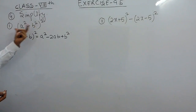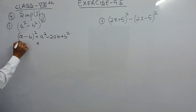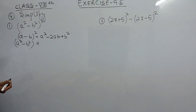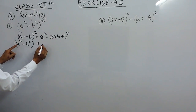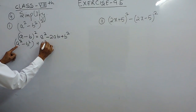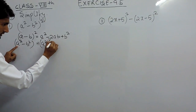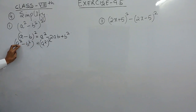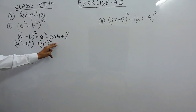So if I want to solve this, I have to substitute the values. So a square minus b square will be equal to — this is a square — so our 'a' here is the complete a square. So in place of 'a', you have to substitute a square, which will become a square raised to power 2.